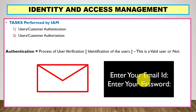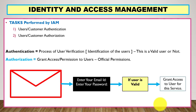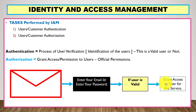For example, in Gmail, if a user wants to access the service, the user needs to identify themselves by typing their email ID and password. If the email ID and password match, the user is valid. If the ID and password are incorrect, the user is invalid and not authorized. Once the ID and password match, the user is valid and can access the service — that is authorization.